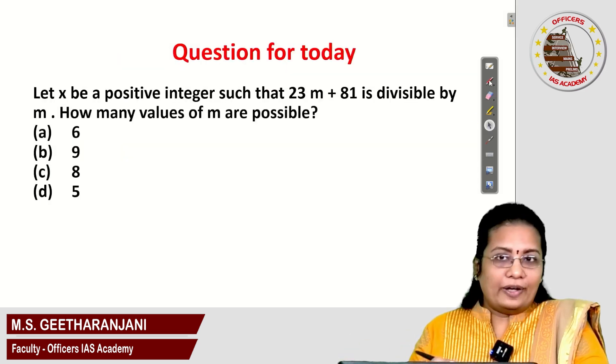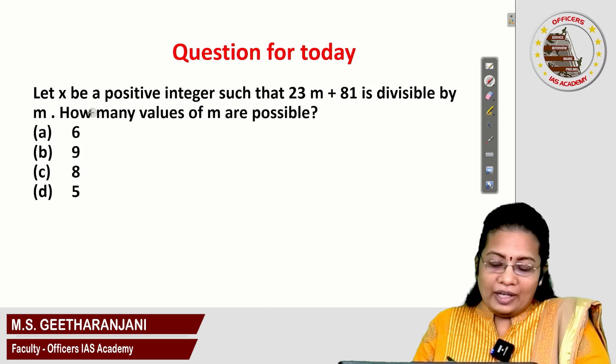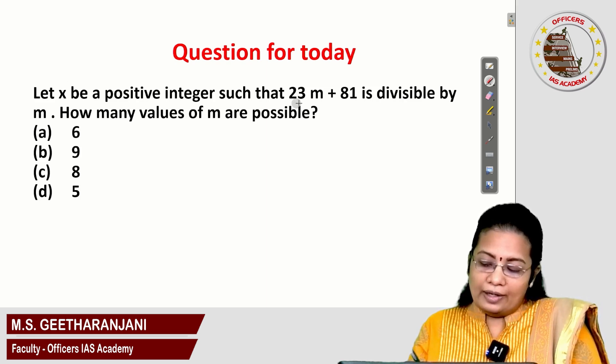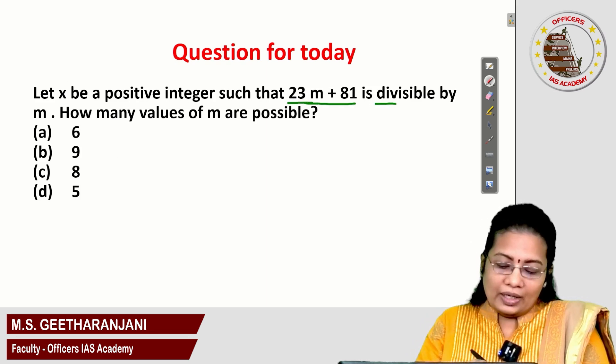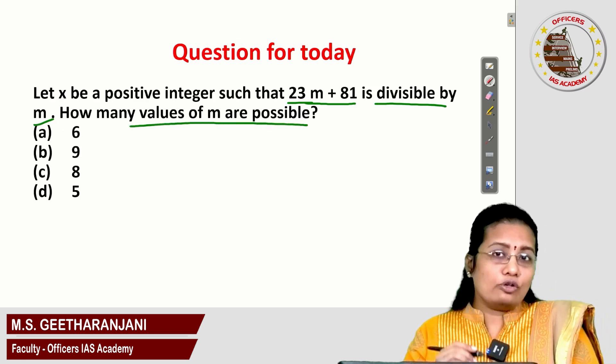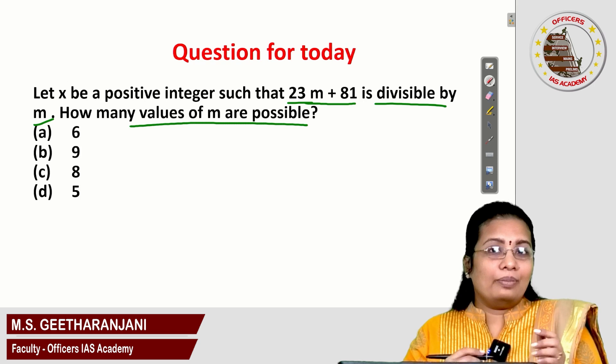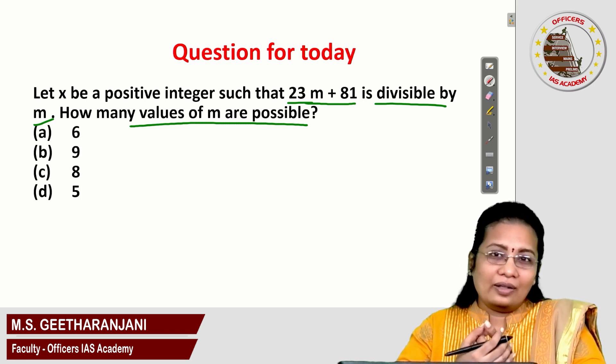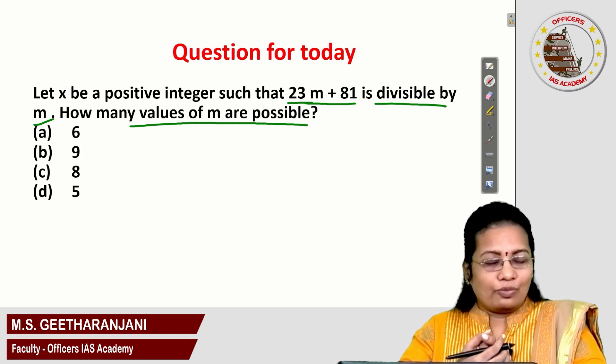Question for today. Let x be a positive integer such that 23m plus 81 is divisible by m. How many values of m are possible? Post your answer in the comment section as usual. Meet you in the next session with another interesting question. Thanks for watching.